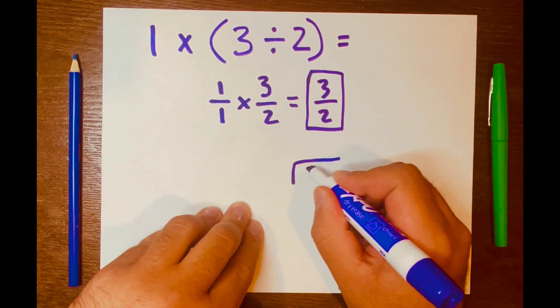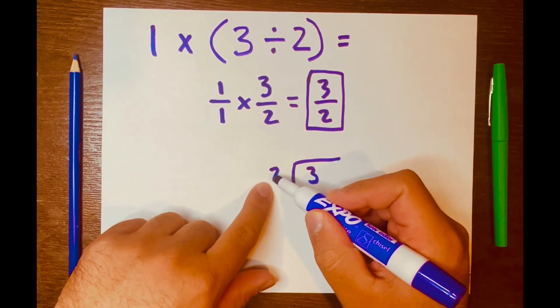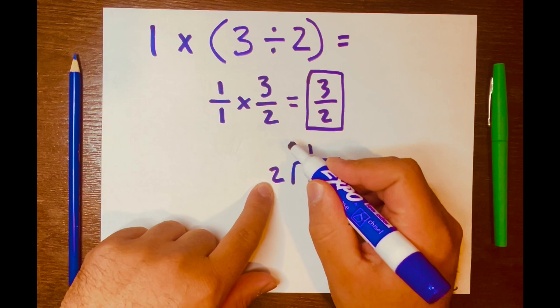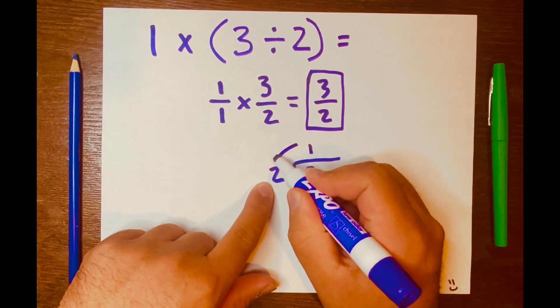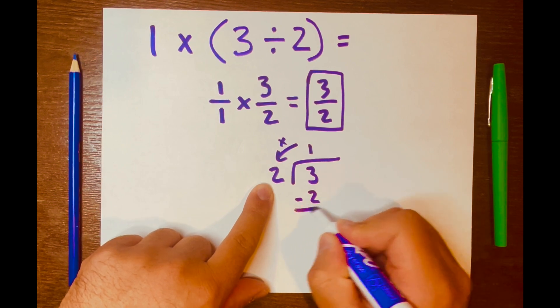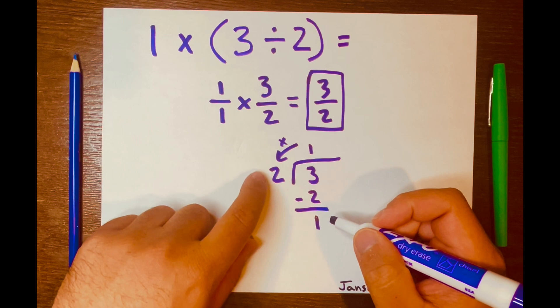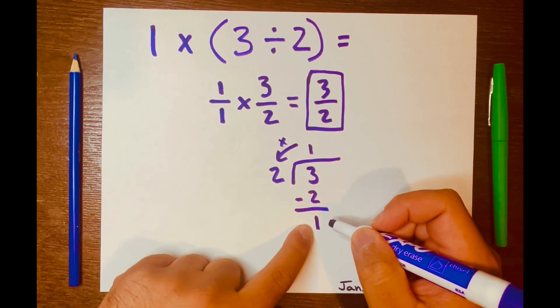So 3 is the dividend, 2 is the divisor. How many times can 2 fit into 3? One time. 1 × 2 = 2. You subtract: 3 - 2 = 1. Now can you fit 2 into 1? You cannot.